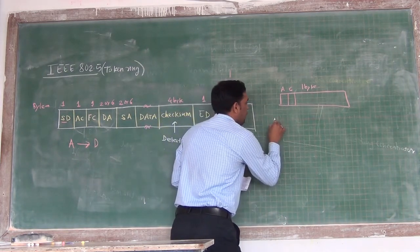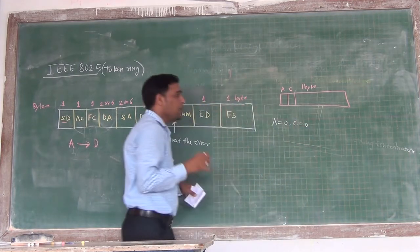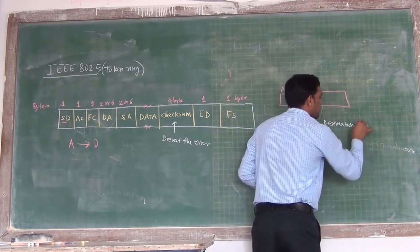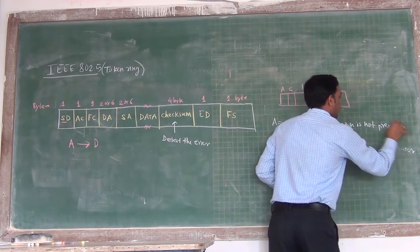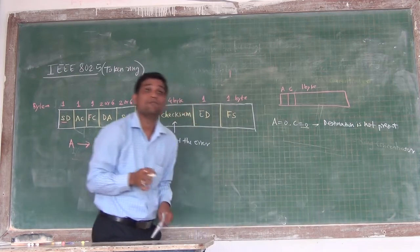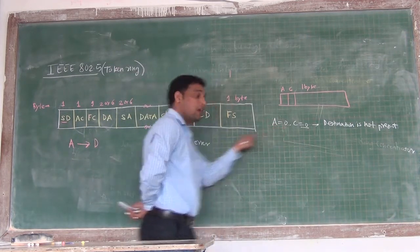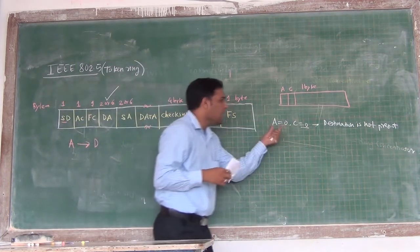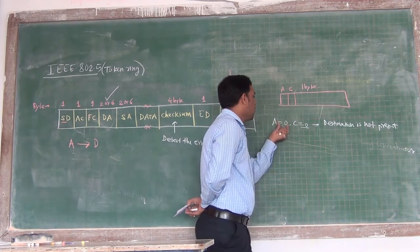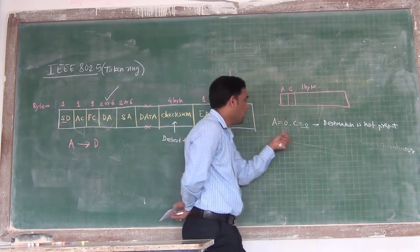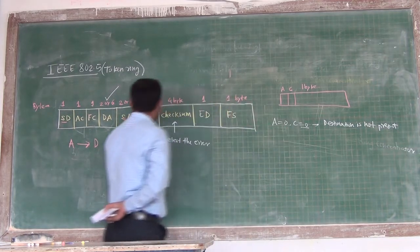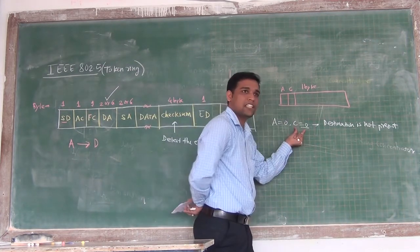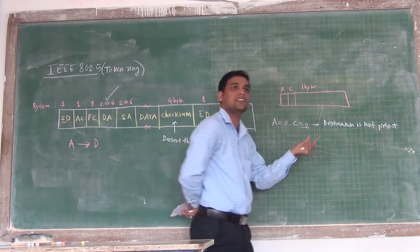If A is 0 and C is 0, this indicates that the destination is not present. A means address — whether the destination is present or not. If A is 0 it means there is no destination in the frame, and C equal to 0 means there is some error in the frame.